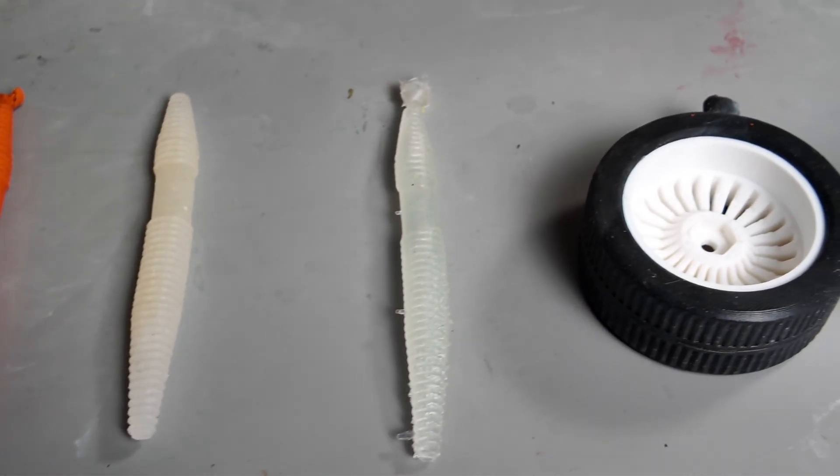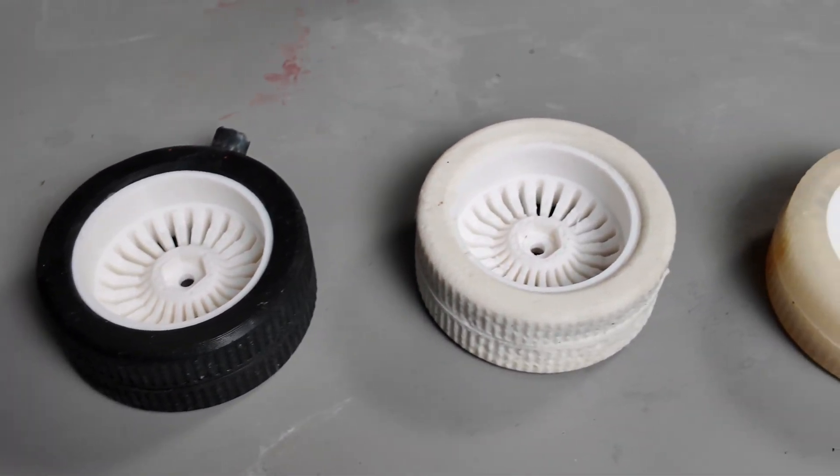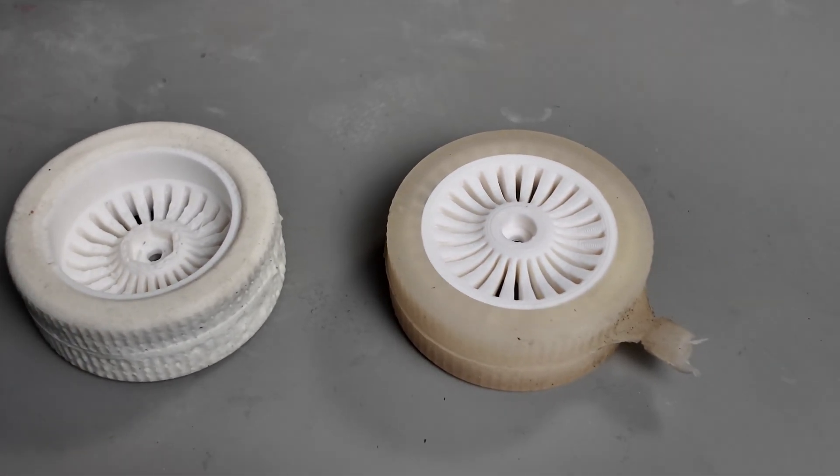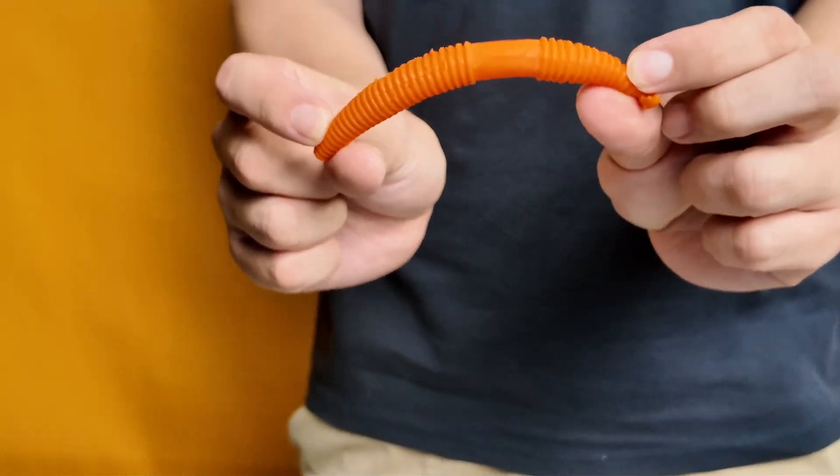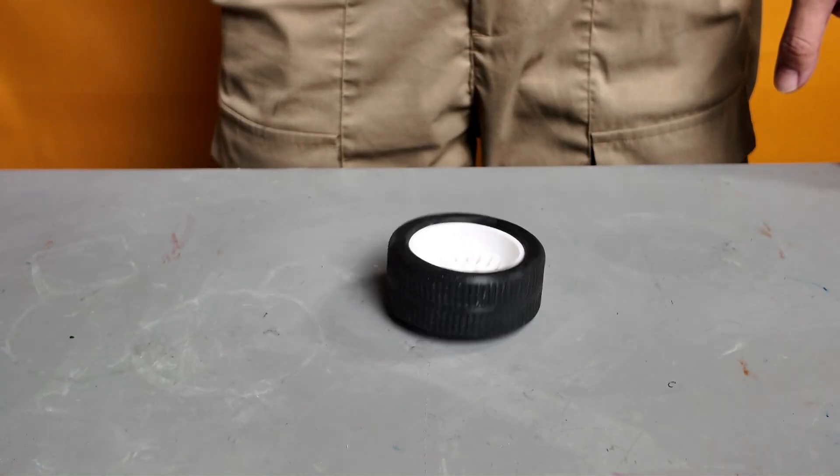40A sits between soft and firm. It deforms without collapsing and snaps back cleanly. It's ideal when you want shape, stability, durability, and controlled flex.